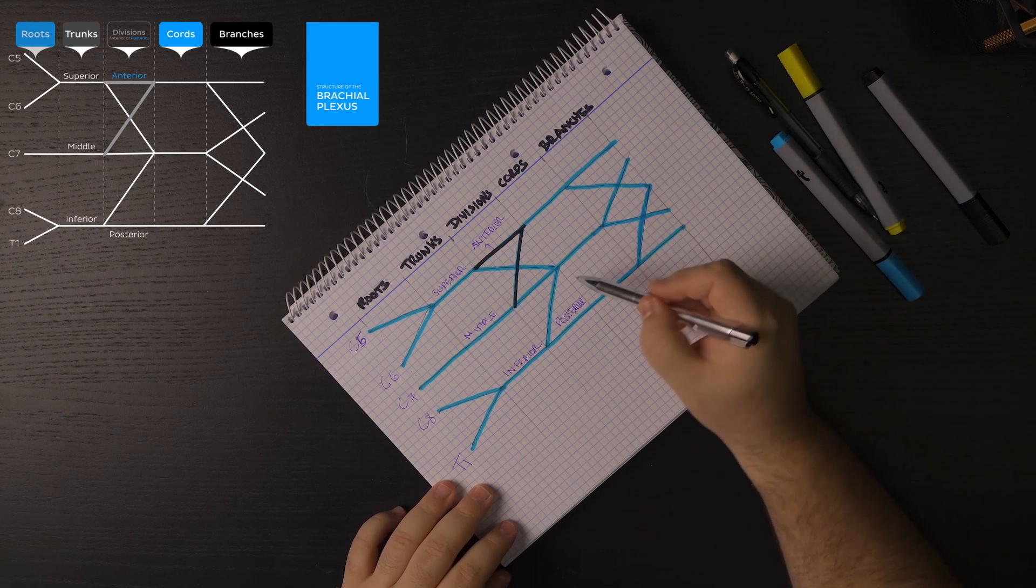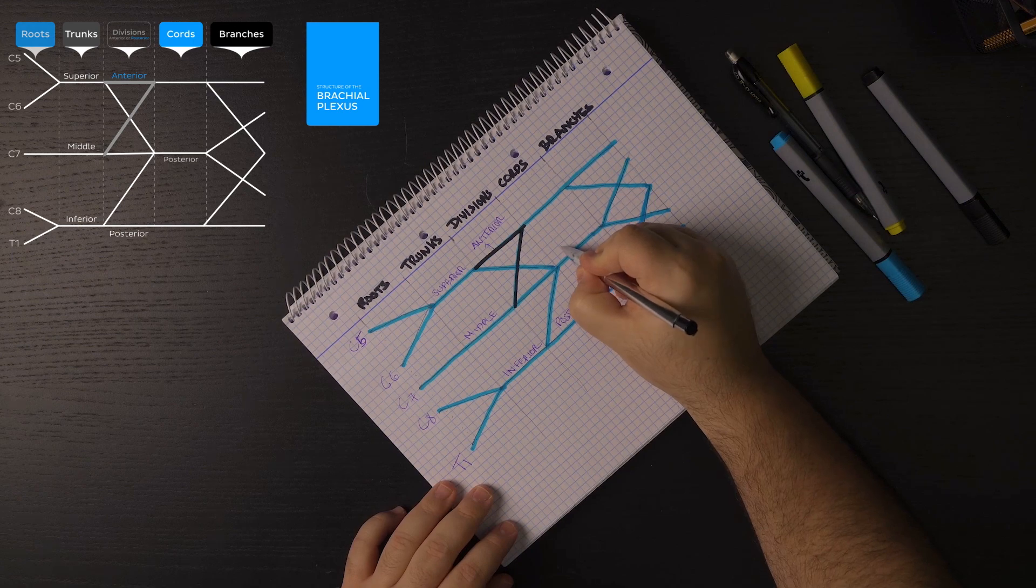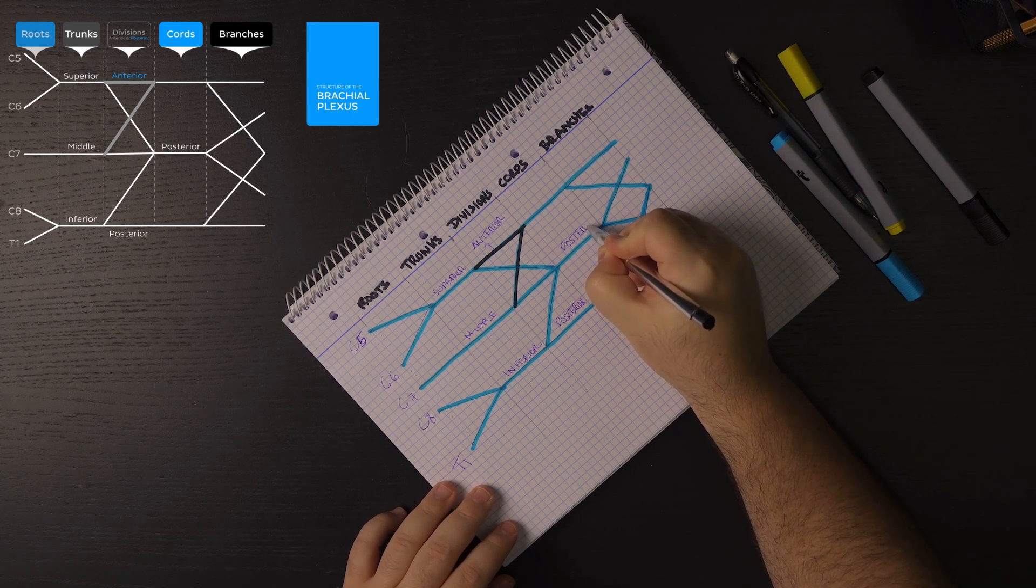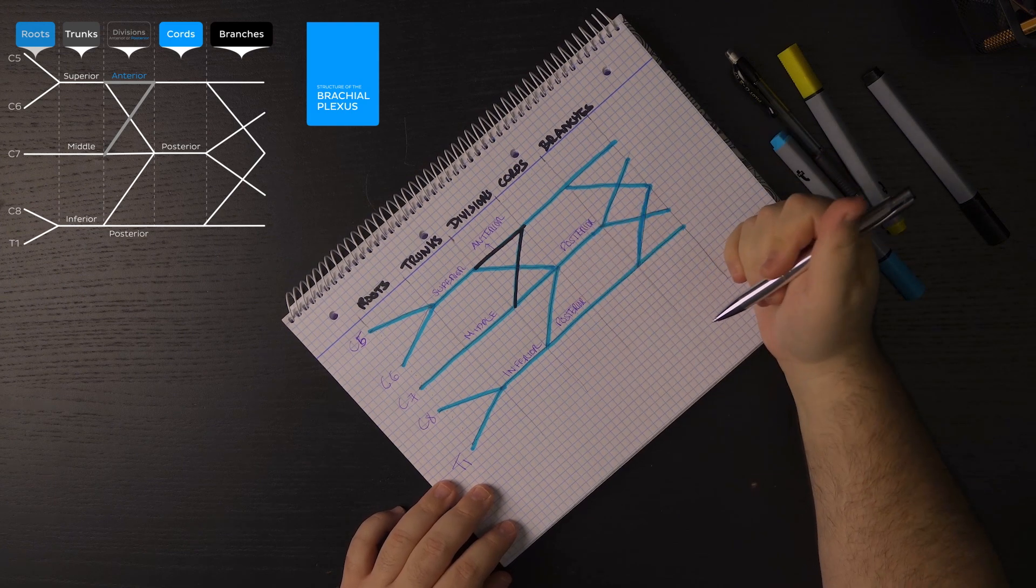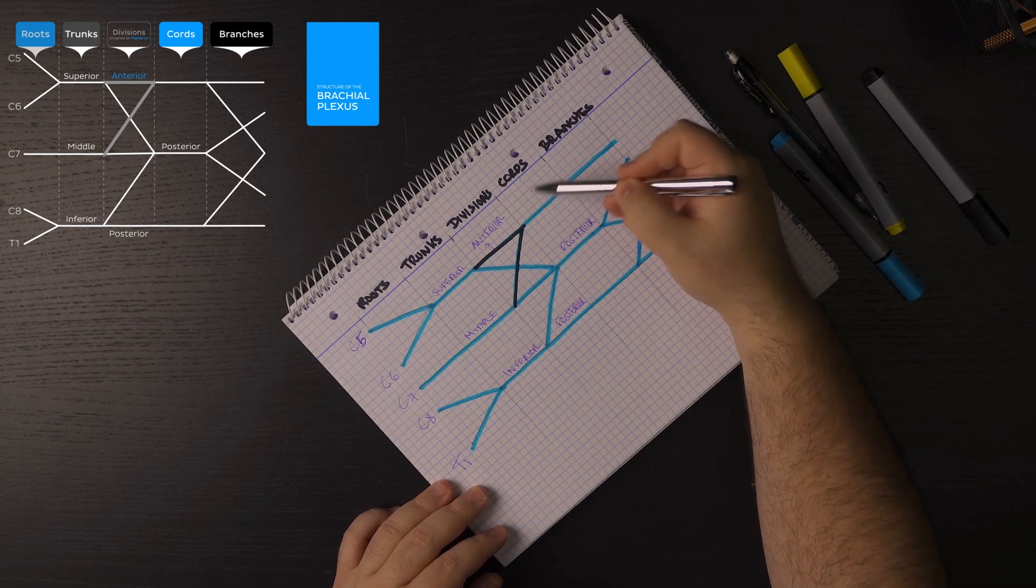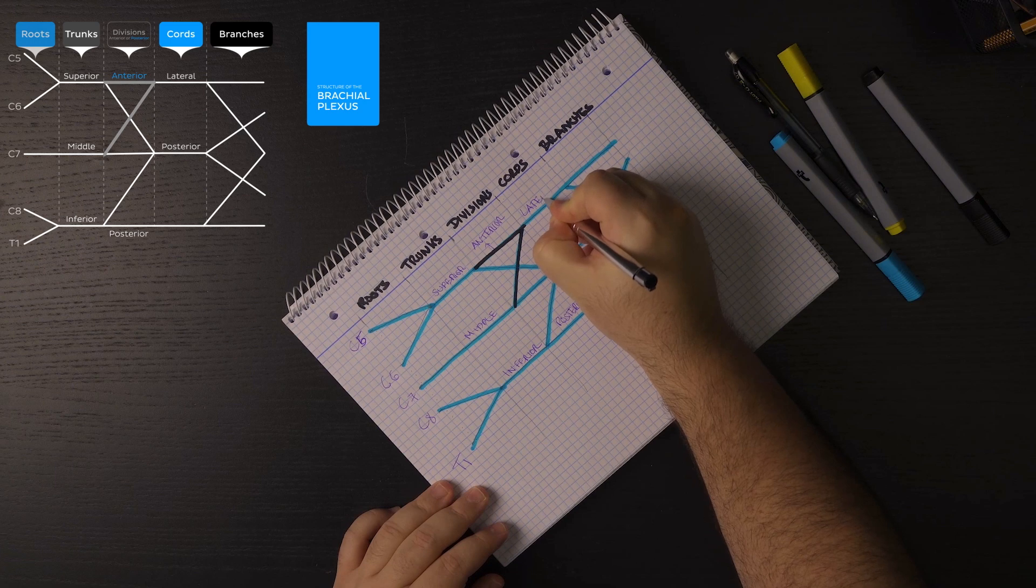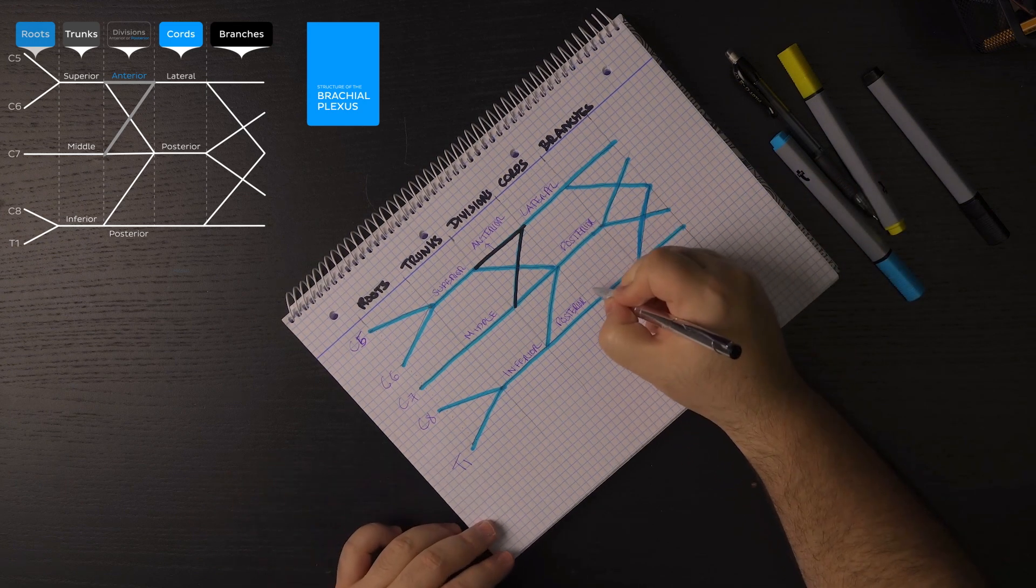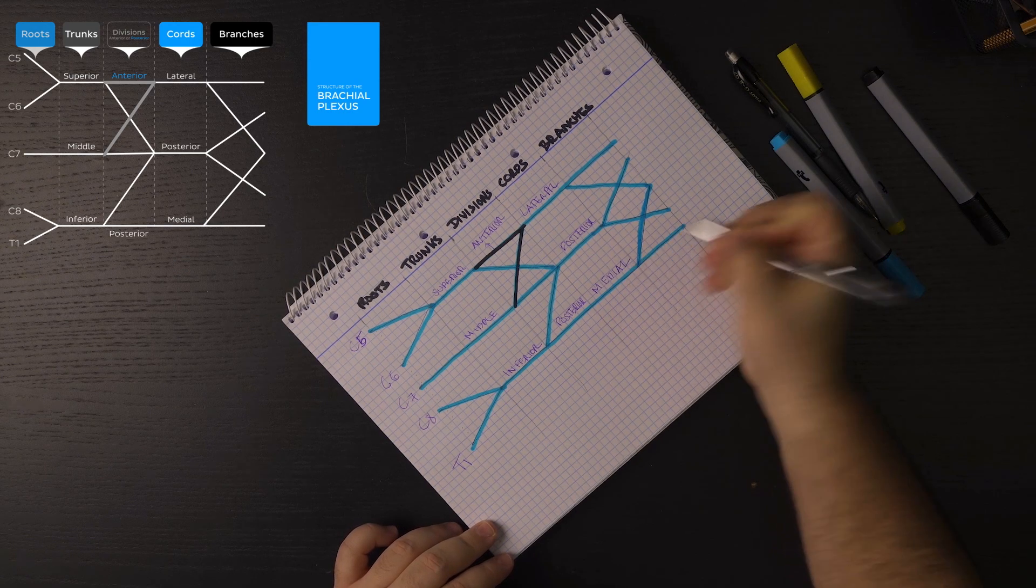As for the cords, let's continue on. Let's say that this one here is the posterior cord. We'll start from the middle one, the posterior cord, which happens to be in the middle. And then this one here is on the side. So it's going to be the lateral cord. And this one is going to be the medial in the body. So we're going to say the medial cord.